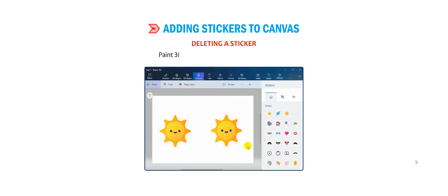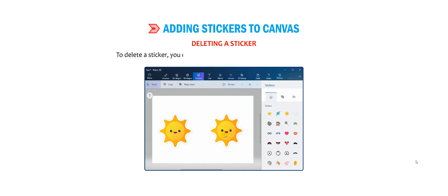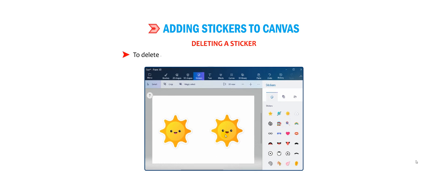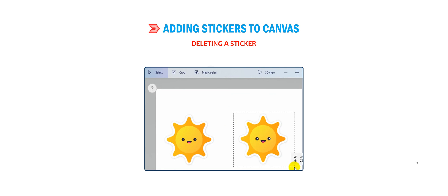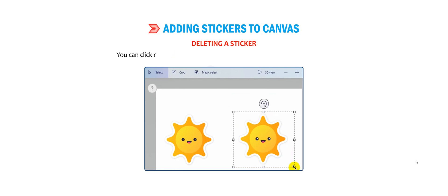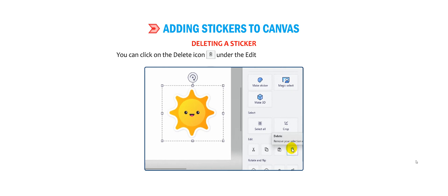Deleting a sticker: Paint 3D provides a facility to erase a sticker. To delete a sticker, you can use the Delete option given in the selection pane. Select the sticker using the select tool from the top menu. Once the sticker has been selected, click on the Delete icon under the Edit option as shown in the figure.